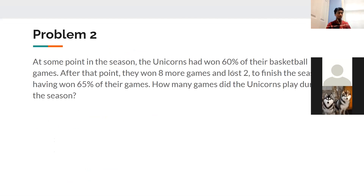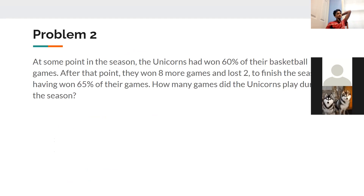The last problem is a word problem — there are lots of word problems now because we've built up skills with equations, fractions, and percentages. At some point in the season, the Unicorns had won 60% of their games. After that, they won 8 more and lost 2 to finish having won 65% of their games. How many games did they play total?